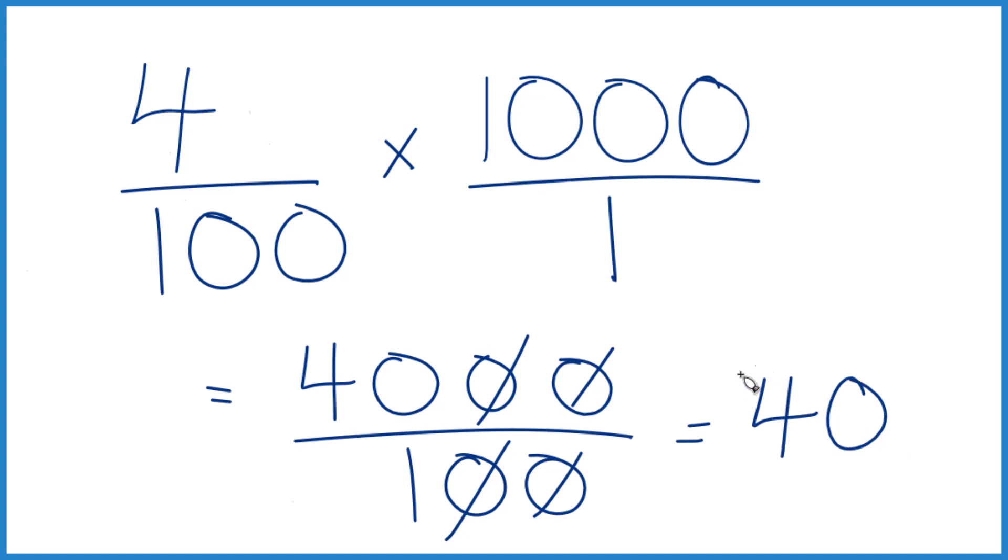4% of 1,000 is 40. The last way is you could just take 4 divided by 100. You get 0.04. You can multiply that by 1,000.